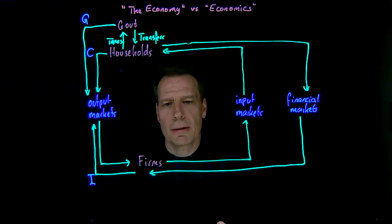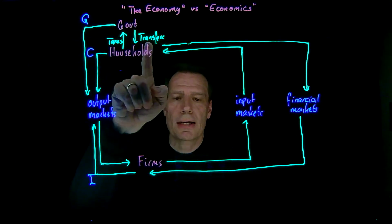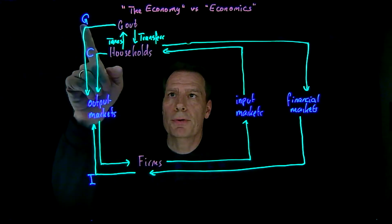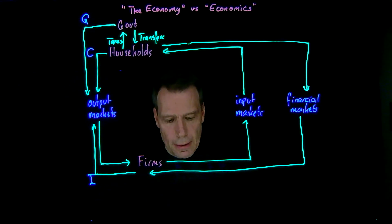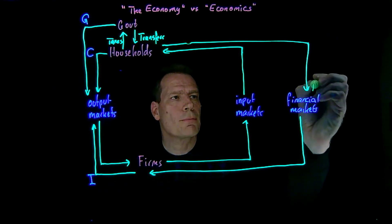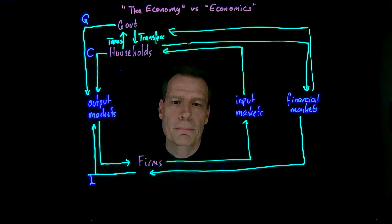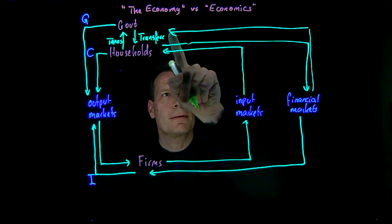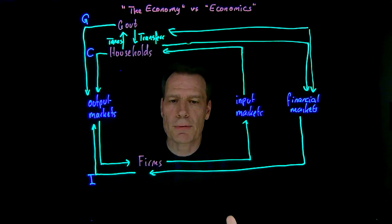Now if the government balances its budget, then what it spends on government purchases and on transfers would be equal to the taxes it collects. But governments often don't balance their budgets — often times they run deficits, where government purchases and transfers are bigger than the taxes they collect, so they have to borrow from financial markets to cover the deficit. Governments could also run surpluses, and when they do, they pay down debt and money flows from the government into financial markets.